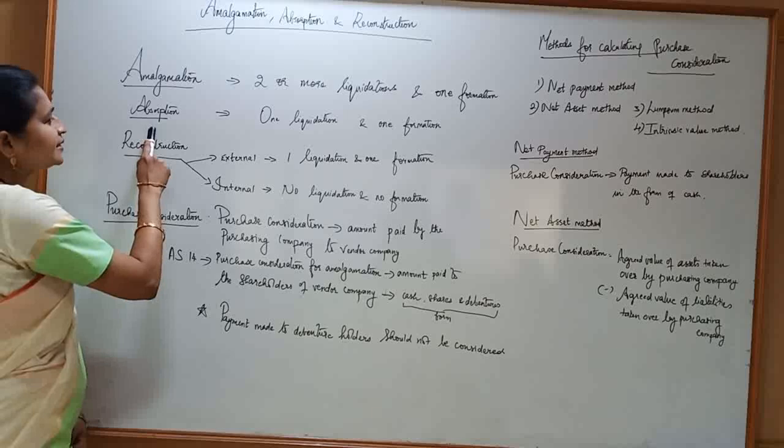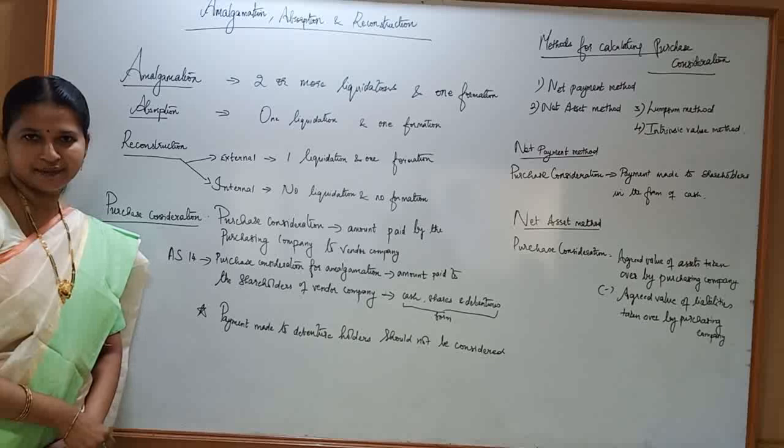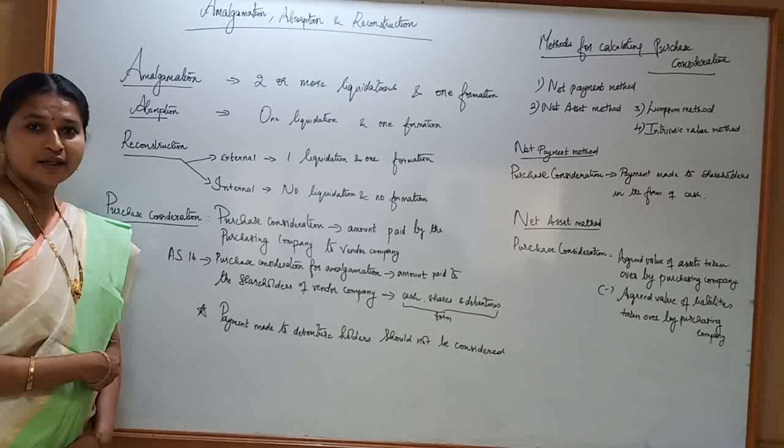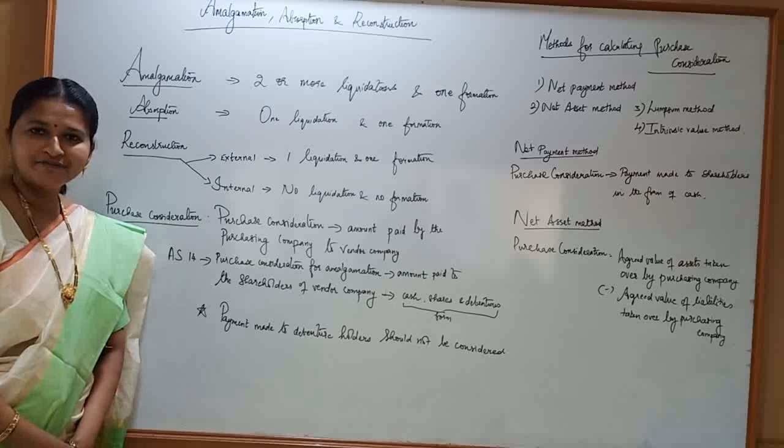Next is absorption. In case of absorption, an existing joint stock company takes over the business of a company which is going to be liquidated, and a new company is formed. So in case of absorption, there is one liquidation and one formation.